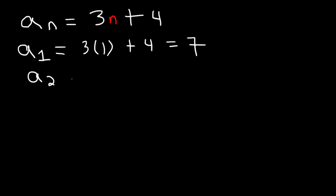The second term, a of 2, just replace n with 2. It's 3 times 2 plus 4, which is 6 plus 4. That's 10.